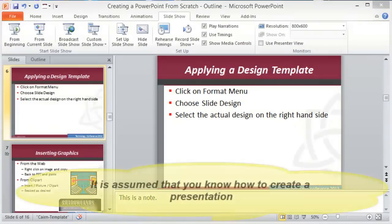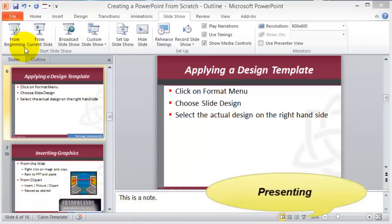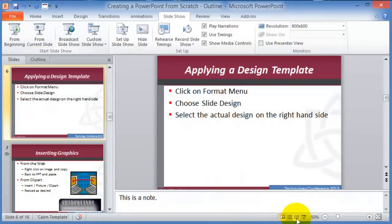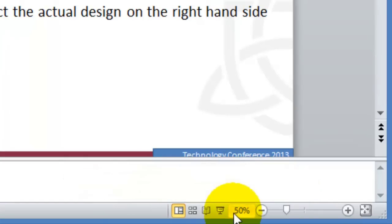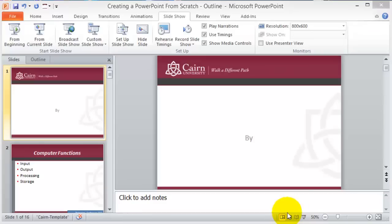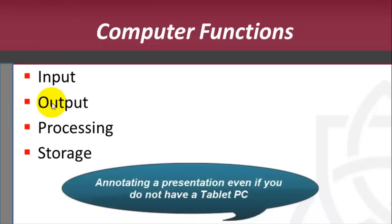Now that we're almost done with our PowerPoint, a couple more things. One is displaying the slideshow. Click on Slide Show and present from the beginning or from the current slide. You can also use the slideshow icon at the bottom, press F5, or press Shift+F5 to start from whatever point you are currently at in your presentation.